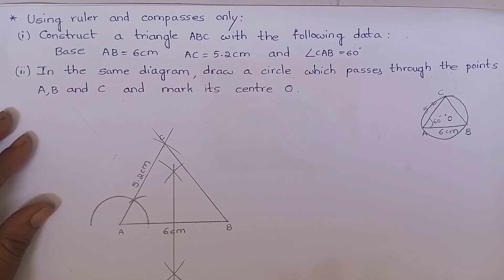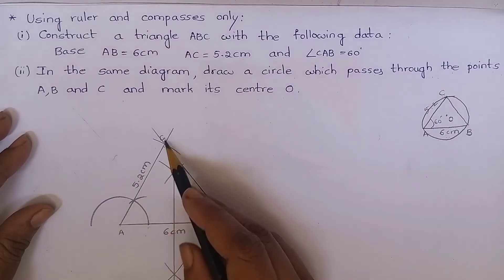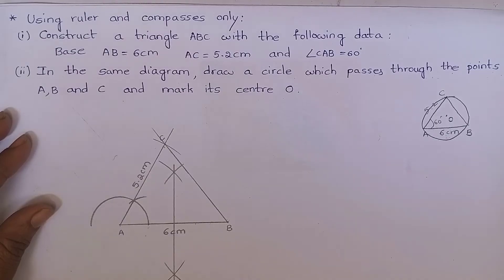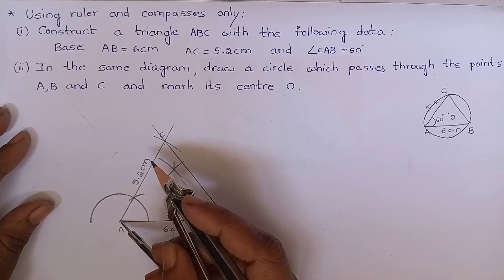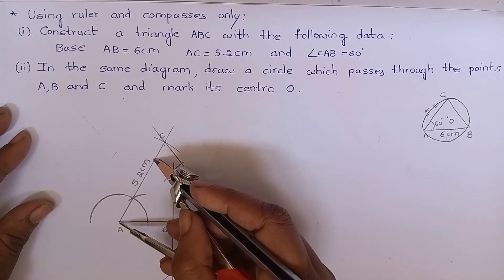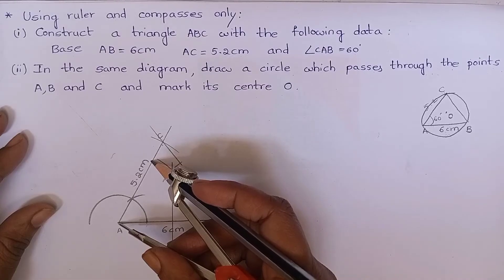Now let me construct a perpendicular bisector for AC. And we know that to construct a perpendicular bisector for AC, we have to take more than half of AC. This is more than half of AC, right?